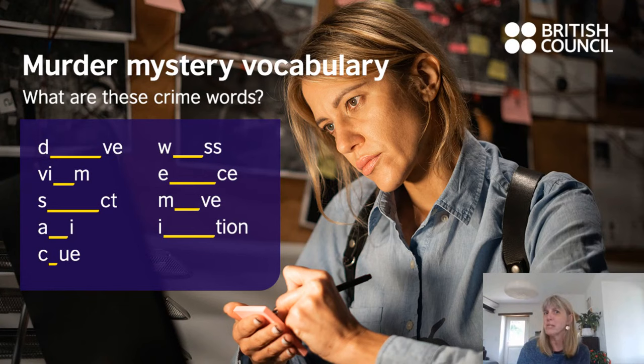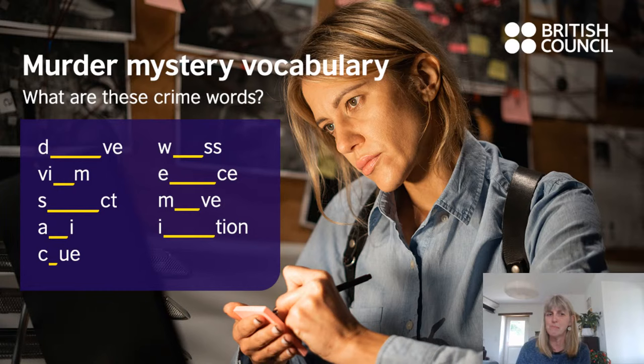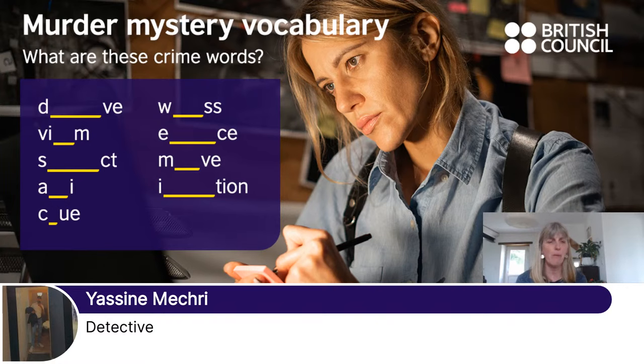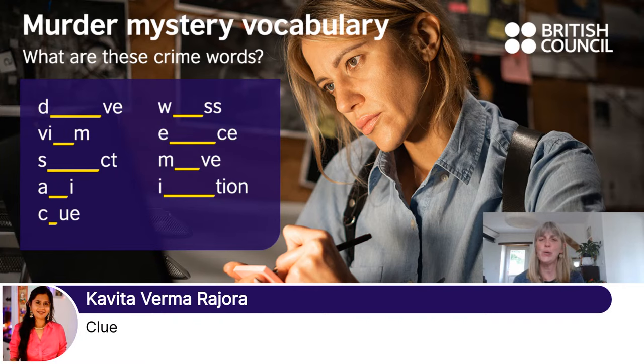So we're talking today about murder mysteries — that's what Sherlock Holmes was good at. We've got some crime words here with some letters missing. Can you write the complete words in the chat? What does eccentric mean? Eccentric means that you do things which are quite out of the ordinary, quite extraordinary — you may be quite surprising. It's kind of not what people think of as normal behavior. The first one: Yasin has got it — detective. Clue — yes, Supercarita, that's the right answer. Victim — yes, good.